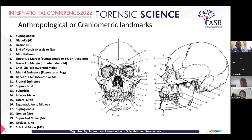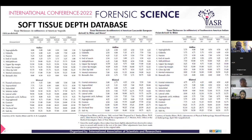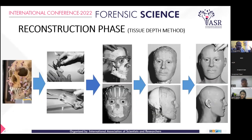For the tissue depth marker method, we use standard landmarks. We have databases of the population and we use those at specific landmarks. We take the skull, orient it in the same way, put the tissue depth markers at specific landmarks, cut the clay, join the markers with the clay, and we get a face.